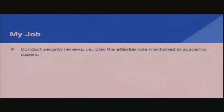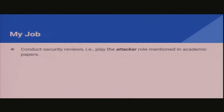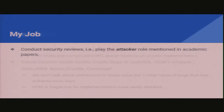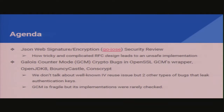I'm a software security engineer, so basically my job is to conduct security reviews. We're talking about two topics. The first one is JSON Web Signature Security Review, and I will show you how tricky and complicated design can lead to unsafe implementation. The second topic is a low-level primitive, GCM Accountable. It's widely used — almost everywhere — but its implementations are rarely checked. I will show you two types of bugs that may leak the authentication key.